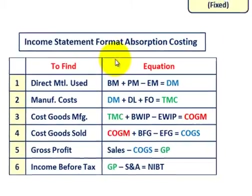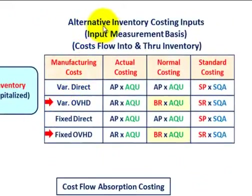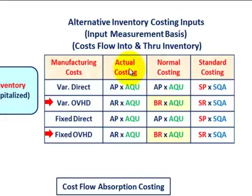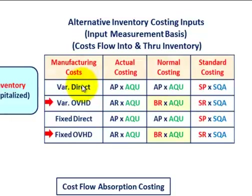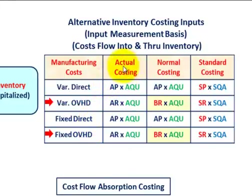Lastly, let's look at the input measurement bases — the alternative inventory costing inputs. These are the costs that flow into and through our inventory. We have three different input measurements: actual costing, normal costing, or standard costing. The manufacturing costs we consider include variable direct costs such as labor and material, variable overhead costs, fixed direct costs, and fixed overhead.